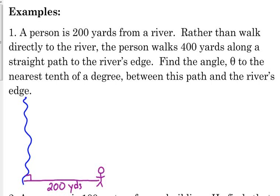So then it says rather than walk directly to the river along that 200 yards right there, they walk along a diagonal to get to the river's edge, and that takes them 400 yards. The question is, find the angle between the path and the river's edge. So it's the angle up there at the top. If you drew your picture like me, you could have drawn the person walking down, whatever. But the way I have my picture set up, this is what we're looking at.